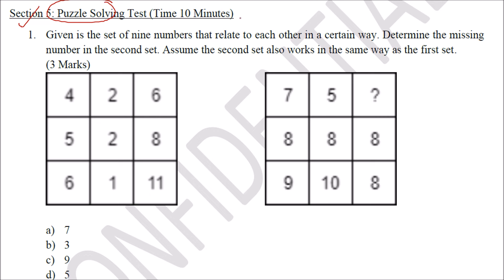You should practice these before you go and write your Infosys examination. The question gives a set of 9 numbers that relate to each other in a certain way — determine the missing number in the second set, assuming the second set works the same way as the first set. These are 3-mark questions and the time allocated for puzzles will be 10 minutes.